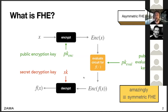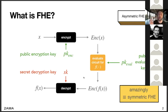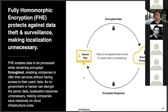What's really amazing is that the two settings — asymmetric and symmetric FHE — are equivalent; you can build one from the other. Unlike the huge difference between symmetric encryption like AES and public encryption like RSA or ElGamal, here we have an equivalence between the two, which already shows we have something very special as a cryptographic object.